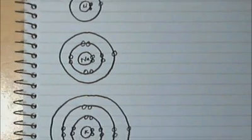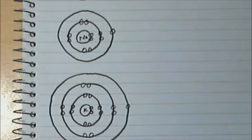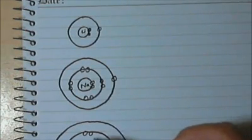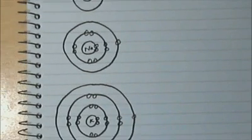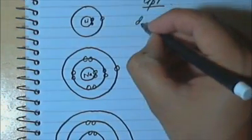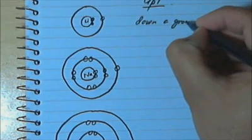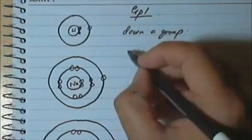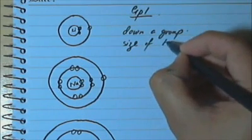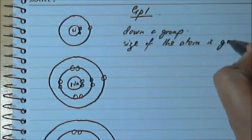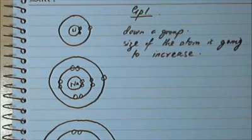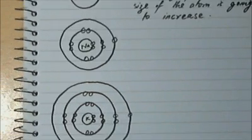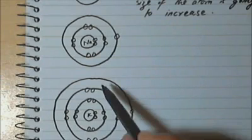Now we're going to see how different atoms compare. I have drawn the electronic configurations of three substances: lithium, sodium, and potassium, which all belong to group 1. As we move down a group in the periodic table, the size of the atom is going to increase. Since the atom is increasing in size, the nucleus is much further inside and is protected and surrounded by electrons.